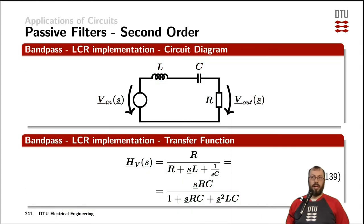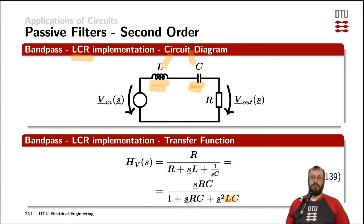Another way of creating a bandpass is with an LCR circuit, where the inductor shorts the low frequencies but the capacitor blocks those, and vice versa, the high frequencies get blocked by the inductor and get shorted by the capacitor. So it's either the inductor or the capacitor that doesn't let the signal through, and only at the resonance frequency, where the characteristic time constant is, both elements would let the signal pass and the resistor is dominating the behavior of the filter.